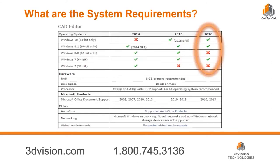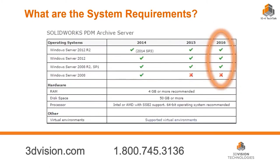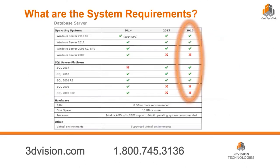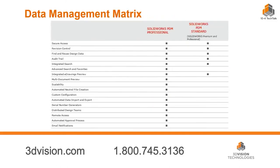System requirements are a little different than workgroup. The CAD editor part has the same system requirements needed for SOLIDWORKS in general. More importantly, you need an archive server, which helps you find and back up your data — because if it's on a network drive, it only gets backed up whenever. The archive server is going to back up that data. You're also going to need a database server. All these specifications are available on the SOLIDWORKS homepage under support system requirements, and we can help you with that through support.